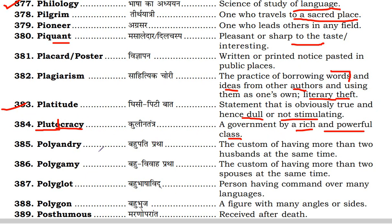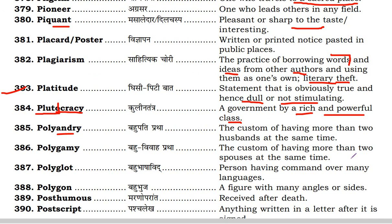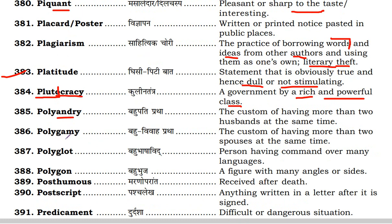Next is polyandry. 'Poly' means many, 'andro' means male. Polyandry is the custom of having more than one husband at the same time. There are different types of marriage rituals. Polygamy — the 'gamy' word shows marriage — is the custom of having more than one spouse at the same time.